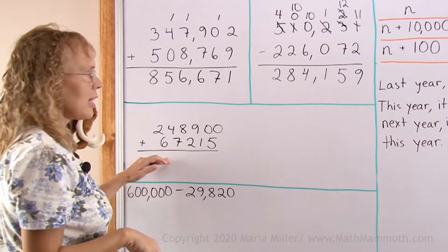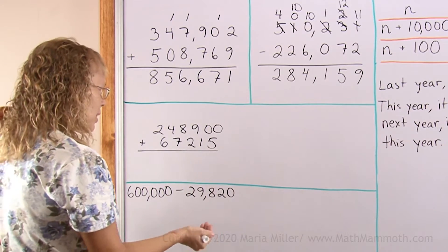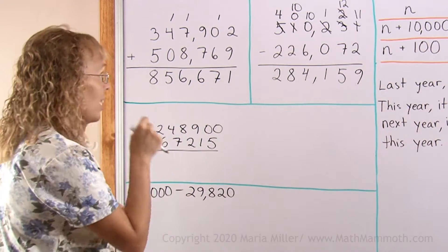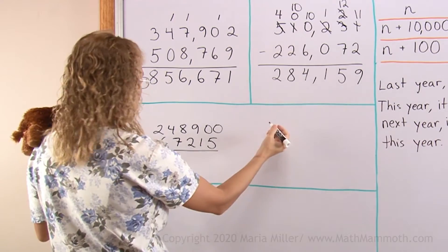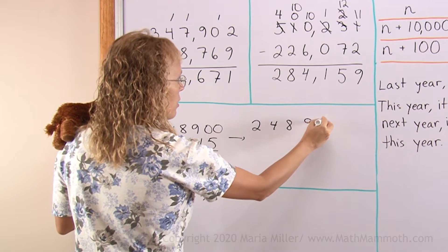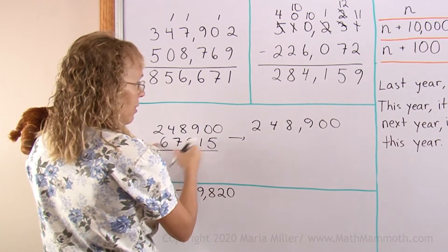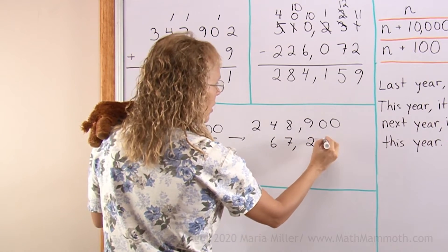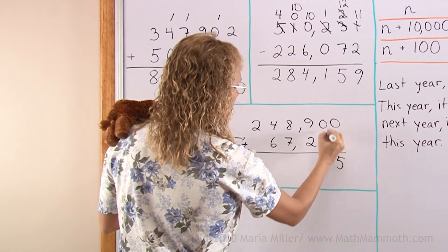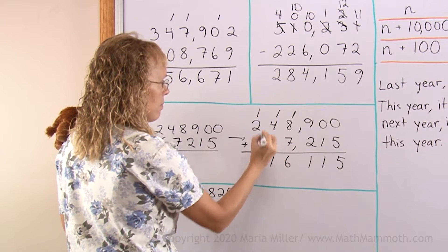Here I have a problem. But that problem has a big problem. Maybe you can see it. What's wrong with it? The problem is that these different place value units are not lined up correctly. And students need to learn that. They need to actually practice writing the numbers onto each other so that they line everything up correctly. So, I'm going to write it again. 248,900. And you can put the comma there to help you line up everything. And then this is 67,000. So, 6 here, 7 here and 215. Now, we're ready to add. Here's 5, 1, 11, 16, 11 and 3.